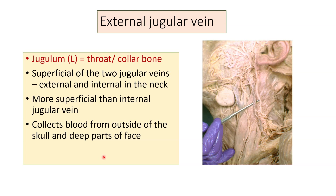Between the two, the more superficial is the external jugular vein when compared to the internal jugular vein. In this picture, you can see the sternomastoid muscle and the external jugular vein crossing obliquely over it, while deeper is the internal jugular vein.